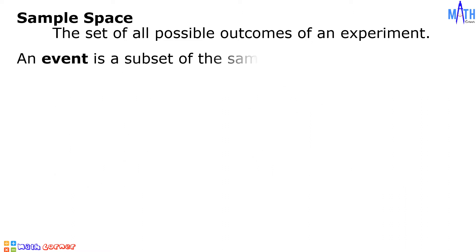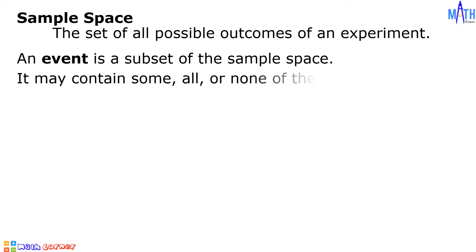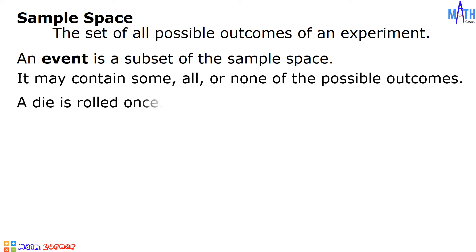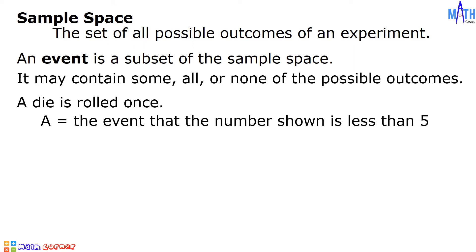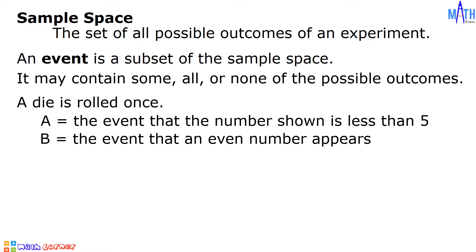An event is a subset of the sample space. It may contain some, all, or none of the possible outcomes in the sample space. Example: a die is rolled once. Let A be the event that the number shown is less than 5, and let B be the event that an even number appears.